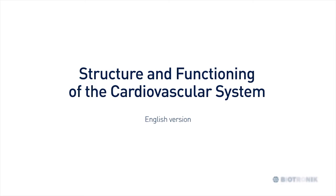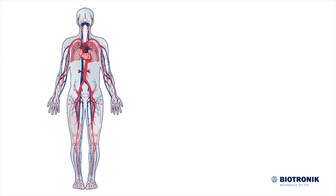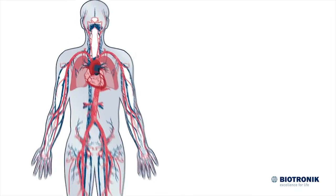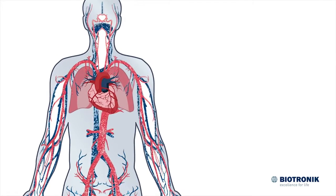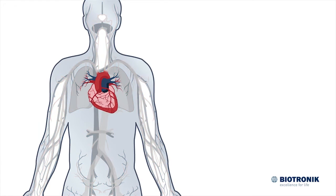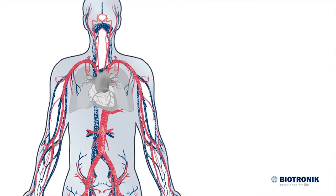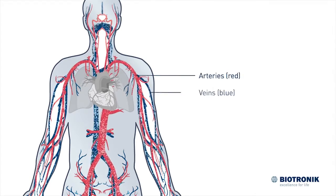The structure and function of the cardiovascular system. Our cardiovascular system circulates blood through our bodies, supplying oxygen and nutrients. The heart is like a pump that drives blood circulation. The blood vessels are the distribution system — they comprise arteries and veins.